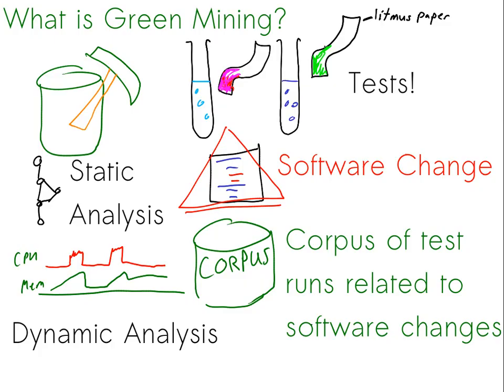So what is green mining? Green mining is the combination of regression testing, static and dynamic analysis, all combined with software changes and mining software repositories research. Basically, what we want to do is run tests on each change and record the difference in power use, look for changes that induce a power change, and then keep a big corpus of these changes in a repository that allows us to look at code statically and say: you've already made a change like this which did induce a power change, and maybe this new change you made, which looks like your old change, will actually induce the same thing.